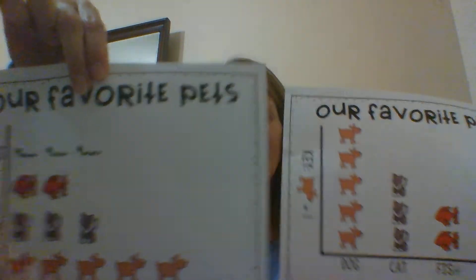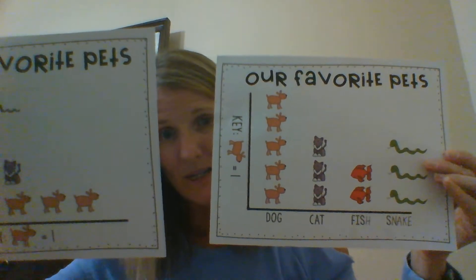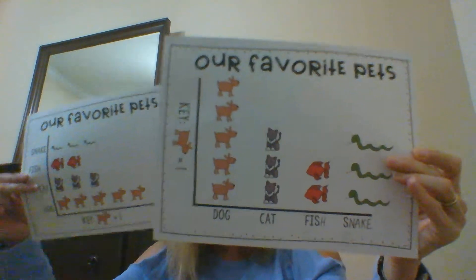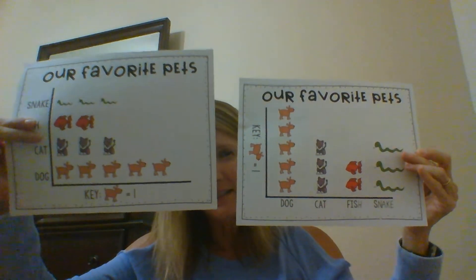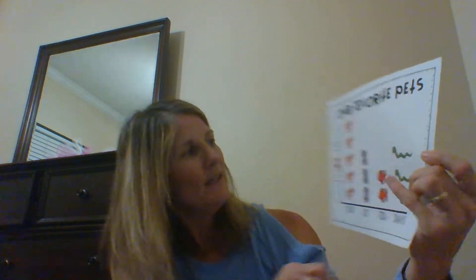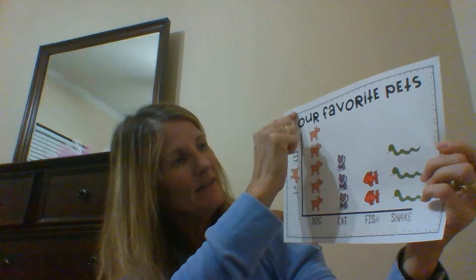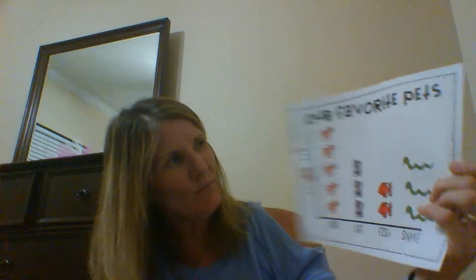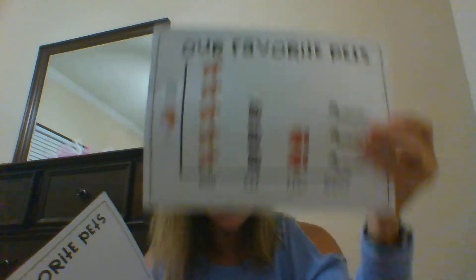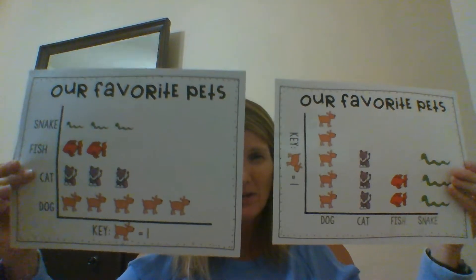What are the parts? The title, the labels, the pictures of course, and our key. A good picture graph has all of those parts to make it really easy to read. So that was the horizontal one. This is the vertical one — up and down — and you can see it has the exact same information, we just went up and down with it. Does it still have a title? Check. Does it still have labels? Check. Does it still have a key? Yep, on the side there. Whether they go horizontal or vertical, a picture graph or pictograph has the same parts.